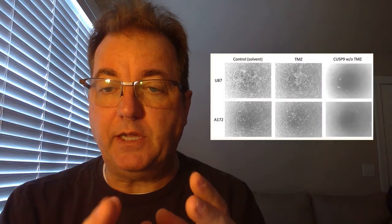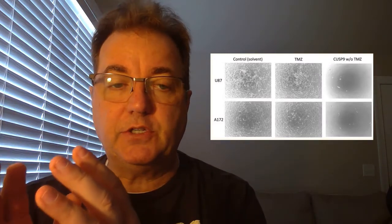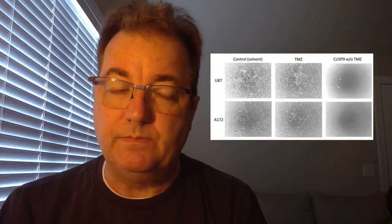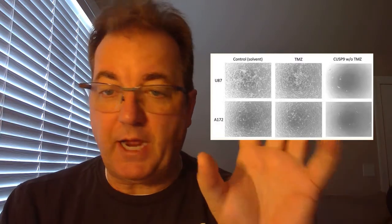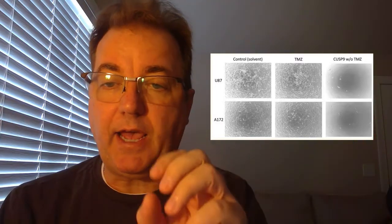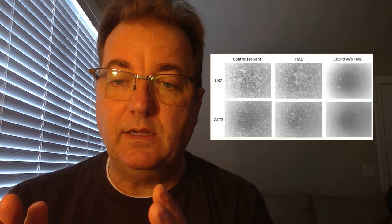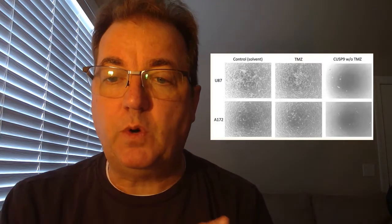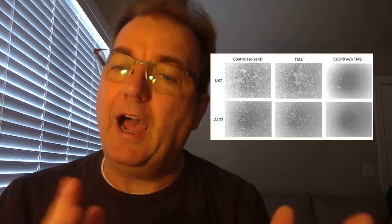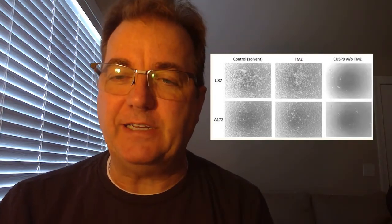They did a study in Petri dishes — I remember this really grabbed my attention. There were three Petri dishes: a control with cancer cells, one with cells treated with TMZ, and another with cells treated with the CUSP9 protocol. The control had normal cancer cells as you would expect. The TMZ dish had a little bit less cancer cells, but cells were there nonetheless. The CUSP9 dish — the cells were gone. It was a clean dish. This astounded me.